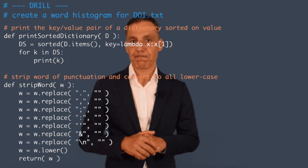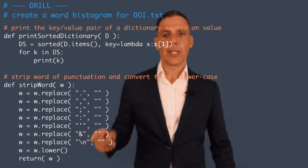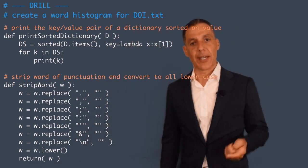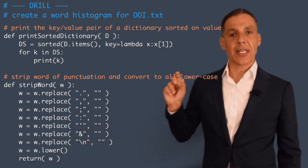Welcome back. Let's get ready to do a drill. I'm going to ask you to take the file doi.txt, which of course you can find on the course website, and build a word histogram.